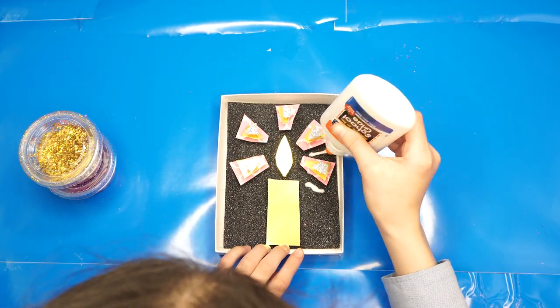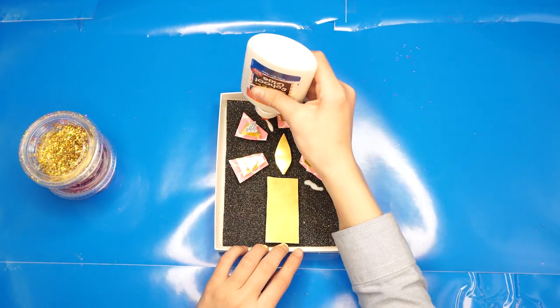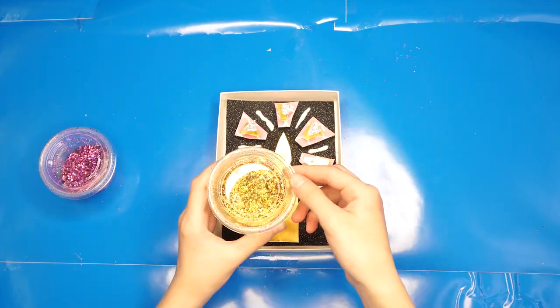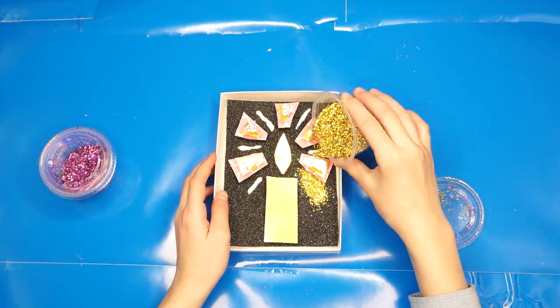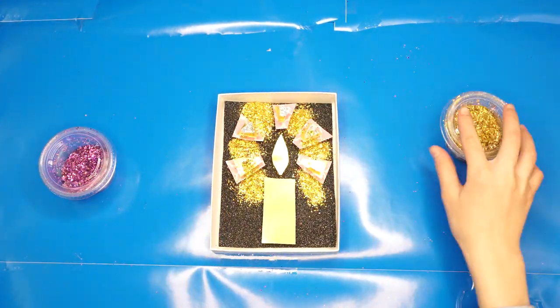With the glue, create six lines between each ray. Pour a little from one of the two colored glitters inside the box and shake it lightly until all the gluey areas are covered. Pour excess glitter out.